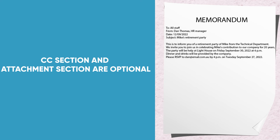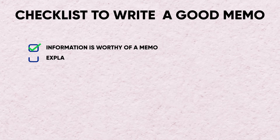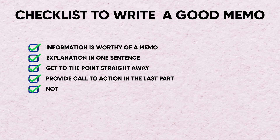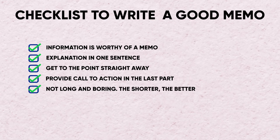So this is how you write a good memo. If you want to write a good memo, you can follow a simple checklist: make sure the information you are writing is worthy of a memo, provide an explanation of the memo in one sentence, get to the point straight away, provide a call to action in the last part, and make sure the memo is not long and boring — remember, the shorter the better. If you follow this checklist, you'll be able to write a great memo and avoid confusion for the people who receive it.